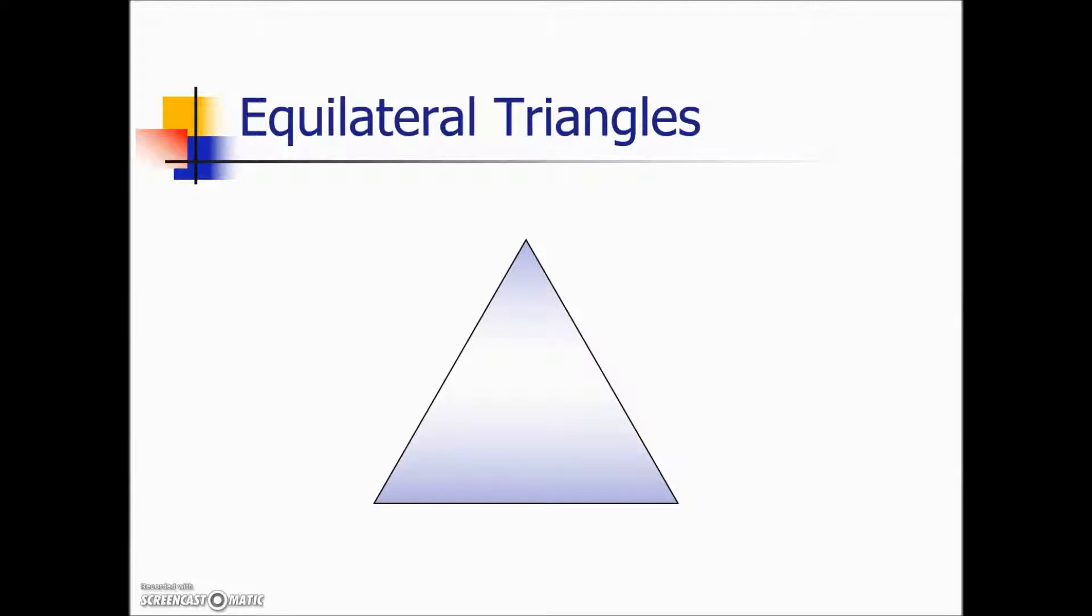The next type of triangle we'll look at closely is an equilateral triangle, which is a triangle where all three sides are exactly the same length and all three interior angles have the same measurement. Since all three sides are equal, their opposite angles would be equal and 180 divided by 3 is where the 60 degree measurement is coming from.